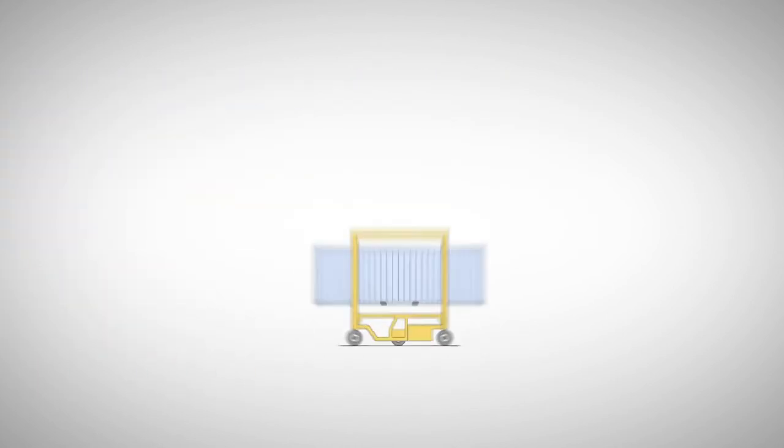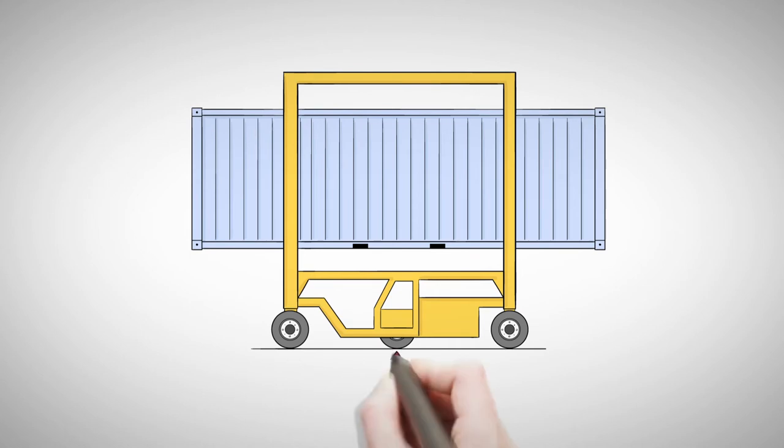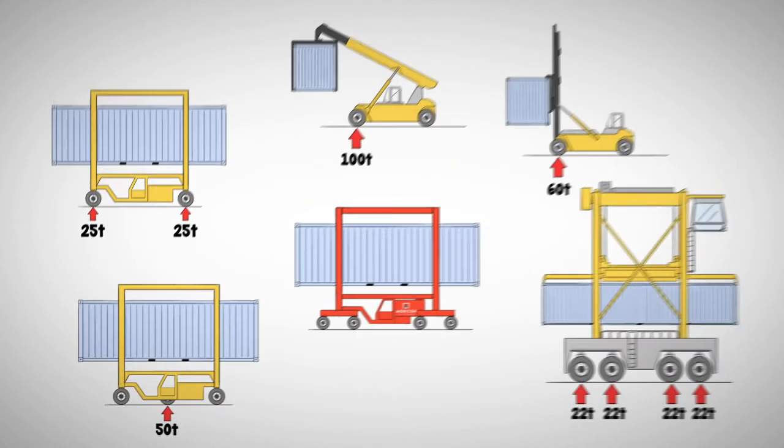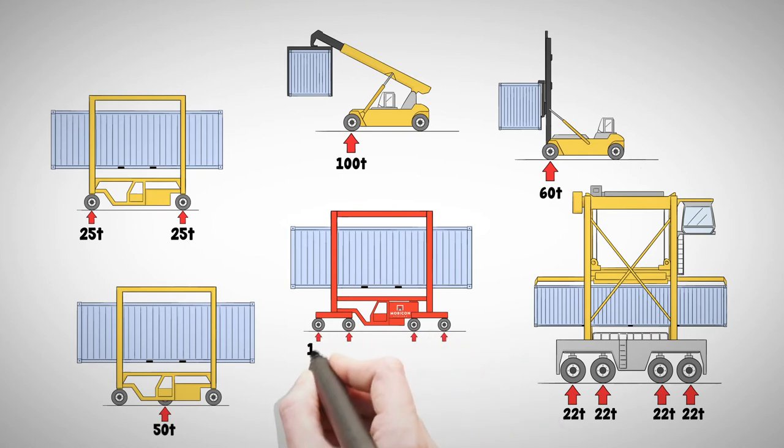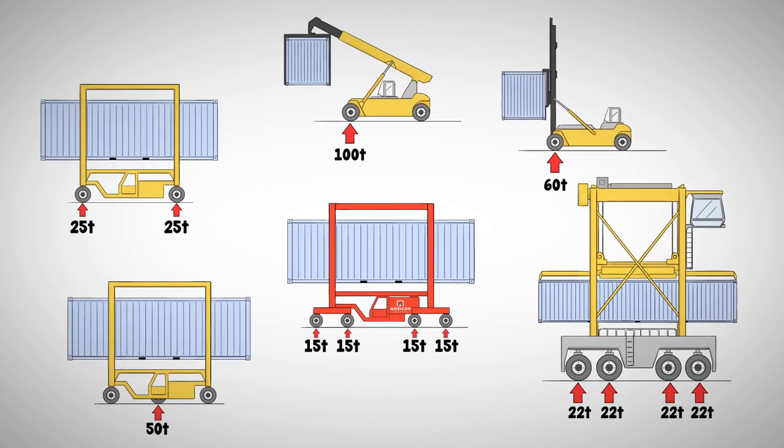A small 1.5 axle straddle carrier, also called three wheelers, has three half axles and a comparable axle weight of 50 tonne. A Mobicon that can stack one over one has axle weights of only 15 tonne (33,000 pounds), by far the lowest axle weight of any container handler in the world.